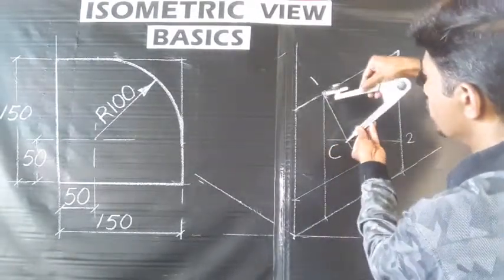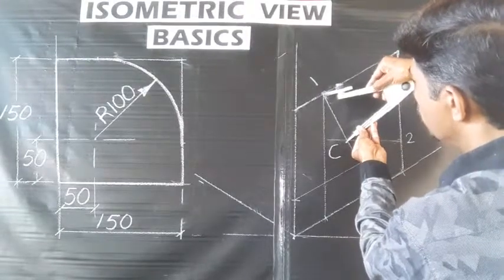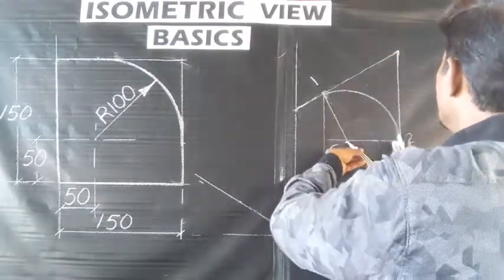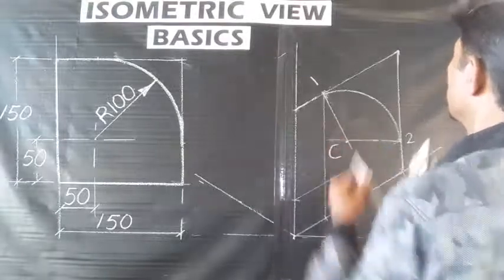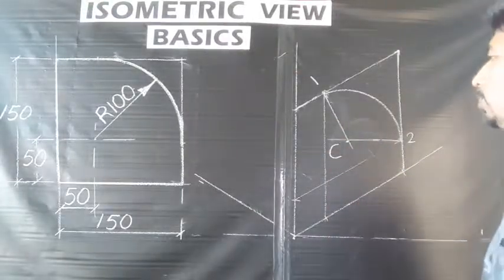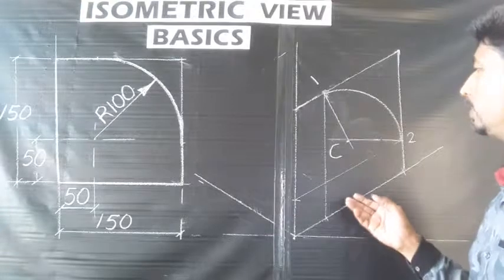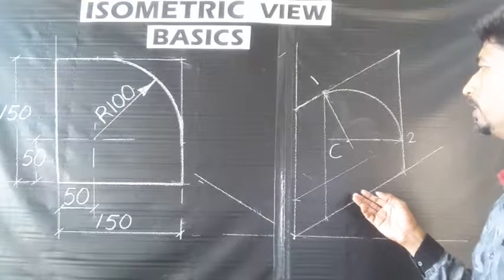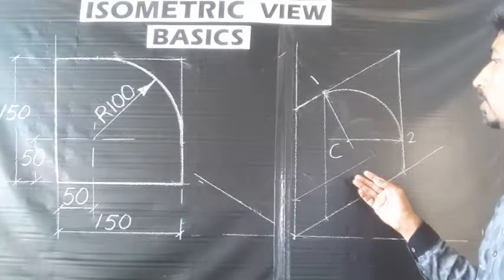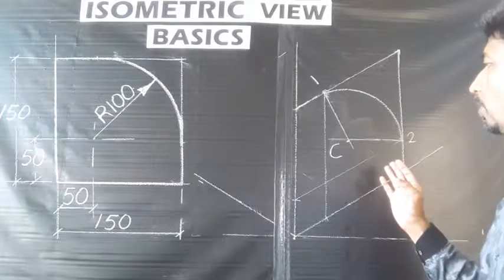So this is our isometric view. The arc variety is processed, and it is a very simple process. Now the drawing needs a little clarity — make it more perfect and visualize it.